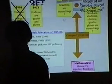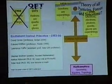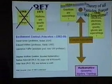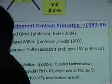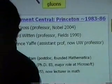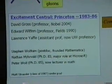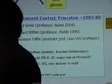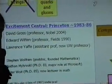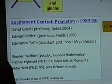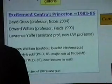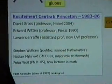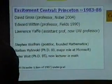I know a lot about this because Excitement Central was Princeton University. This was one of the places where a lot of that work was done, and I was an undergraduate there at the time. There were quite a few interesting people there. David Gross, who won a Nobel Prize in 2004 for work done on the theory of quarks and gluons, was a professor there, very excited about string theory. Edward Witten, the world's foremost string theorist, who won a Fields Medal in 1990 for mathematical work, was there. Lawrence Yaffe was there too, though he was not working on string theory.